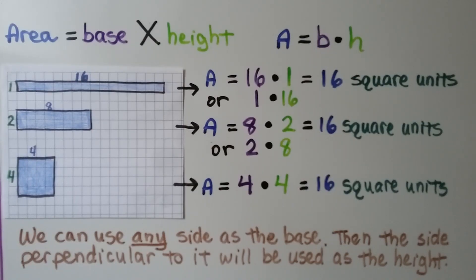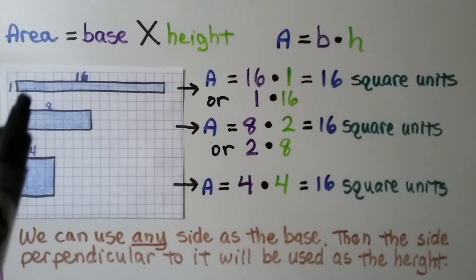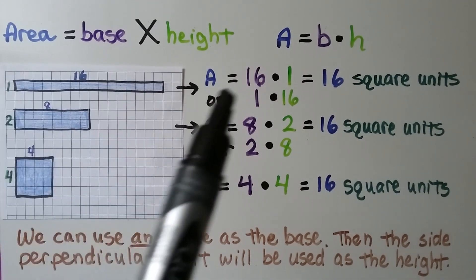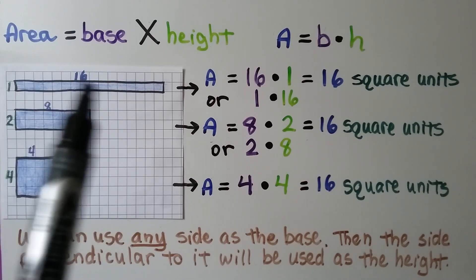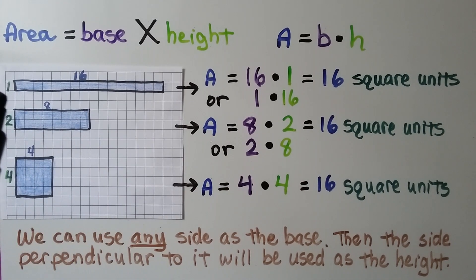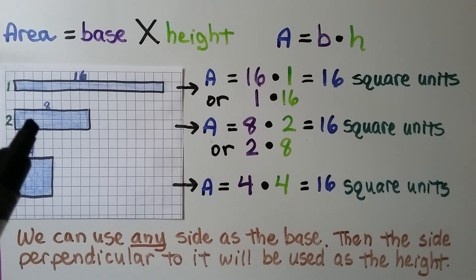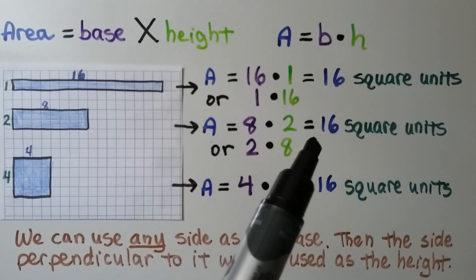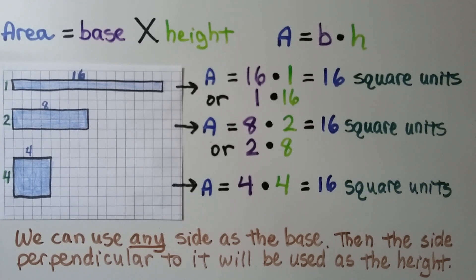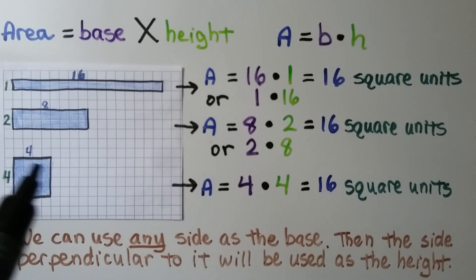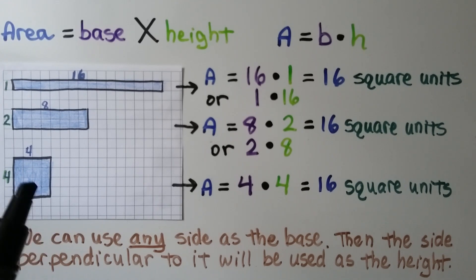Using the formula area equals base times height: for this long skinny rectangle, the area equals 16 times 1, which is 16 square units — there are 16 squares in it. We could also use a base of 1 and height of 16; it's still 16 square units. For another rectangle with base 8 and height 2, we do 8 times 2, also 16 square units. This square has a side of 4 — all sides are 4 — so 4 times 4 is also 16 square units. All are 16 square units, but they look different. We can use any side as the base, and the side perpendicular to it is the height.